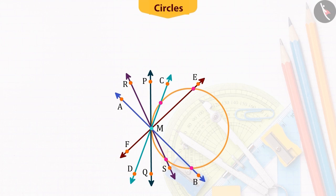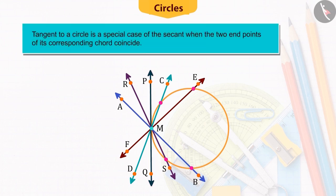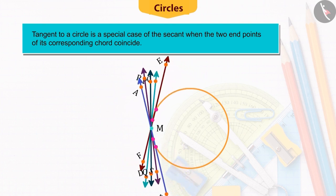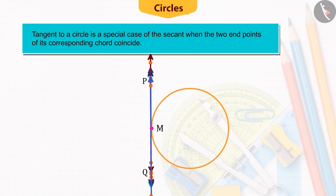In our previous video, we learned that the tangent to a circle is a special case of the secant where the two endpoints of its corresponding chord coincide. Let us look at this activity to understand this better.